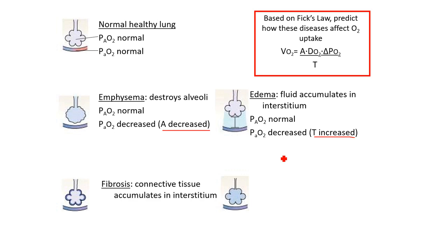Next, we've got fibrosis. Basically what happens is there's connective tissue that's in the interstitium. It's making the alveoli thicker. This doesn't change alveolar oxygen, but it reduces arterial oxygen because we've increased this thickness. Again, same type of thing. We've increased the distance it has to travel.